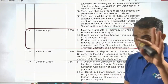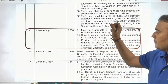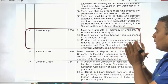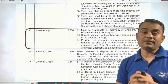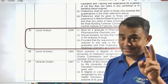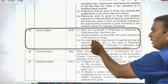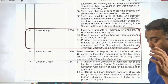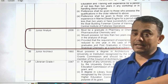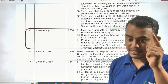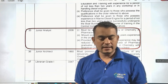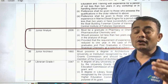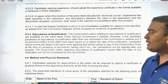For the Junior Analyst post, the student must be a graduate in Pharmacy, Chemistry, or Pharmaceutical Chemistry with not less than two years of experience in the analysis of drugs. However, the requirement of experience may be reduced to one year in the case of a pharmacy graduate. So if you hold a Bachelor's degree in Pharmacy or Pharmaceutical Sciences, one year of experience is required.